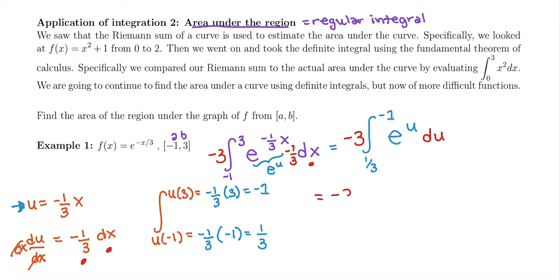Now I'm going to keep that negative 3 outside and integrate e to the u. The antiderivative of e to the u is just e to the u plus k, or in this case, e to the u with an evaluation bar from one-third to negative 1.